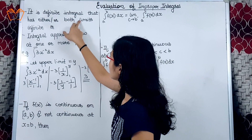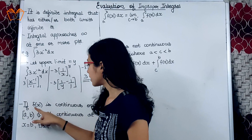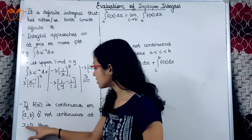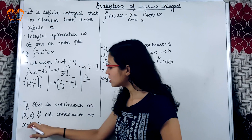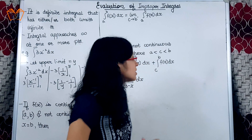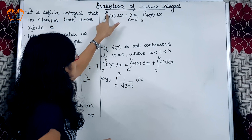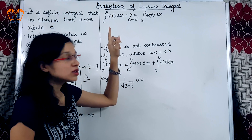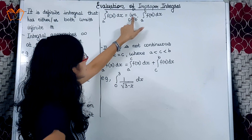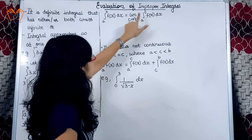Here we can see that the limits are unbounded or the function is unbounded. First case: if f(x) is continuous on the closed interval [a, b) and not continuous at x equals b — that is, whenever we substitute x equals b, the integral will approach infinity — then integration from a to b of f(x) dx equals the limit as c tends to b minus of integration from a to c of f(x) dx, where b is replaced by c.